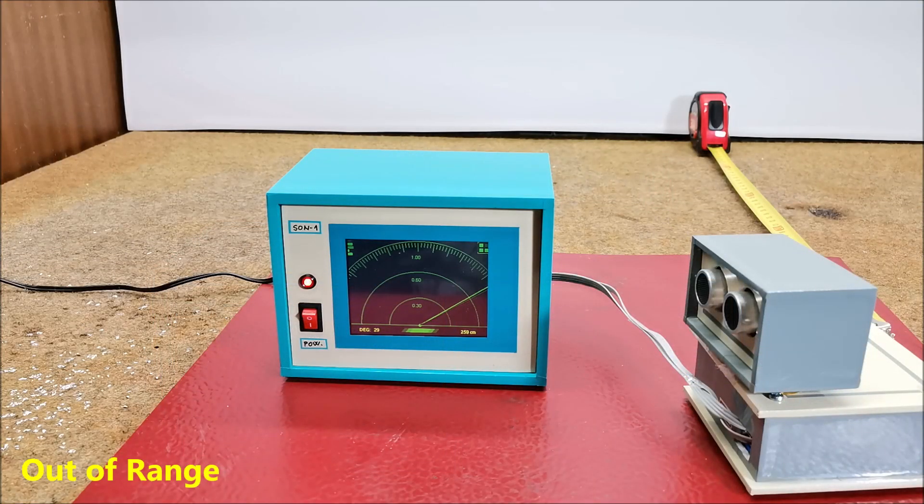If the nearest obstacle is greater than 1 meter, yellow dots are drawn on the last arc indicating an out of range condition.